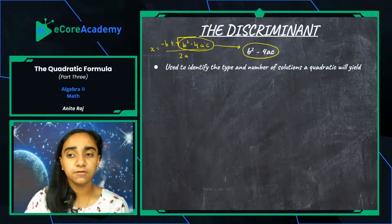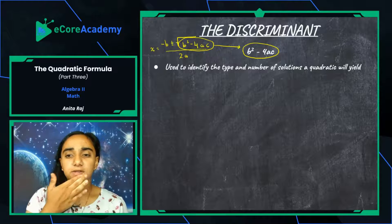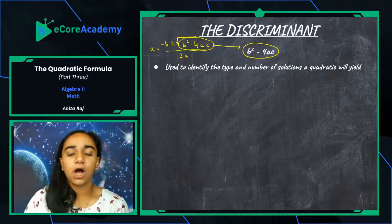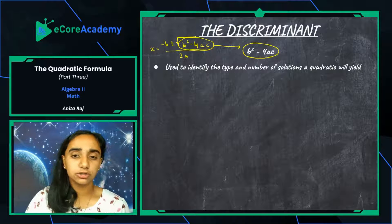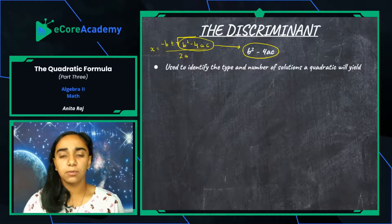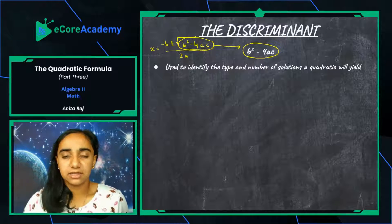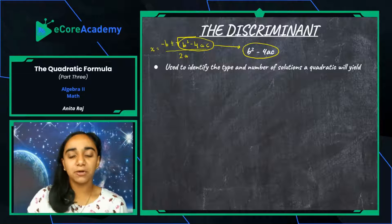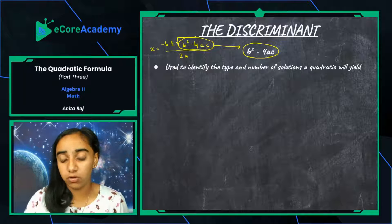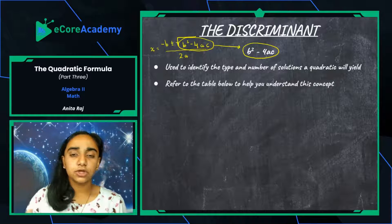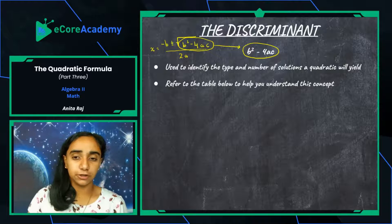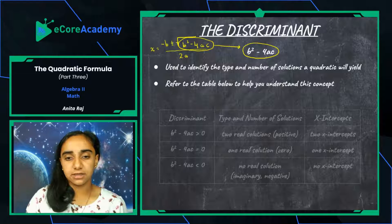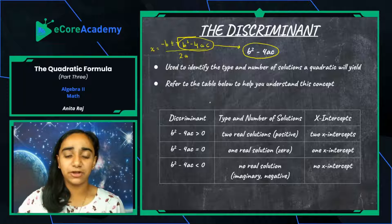The discriminant is used to identify the number of solutions a quadratic will yield — whether it's no solutions, one solution, or two solutions — and to identify the type of parabola you're going to have, without you having to actually graph your quadratic equation. Refer to the table I'm going to show you to help understand this concept. If you're taking notes, I'd highly suggest you copy this table down because it is very useful.